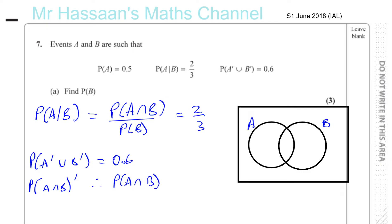Now that's going to help us. Because once we know that P(A∩B) is 0.4 and we know the probability of A is 0.5, then the part of A only — outside of B — must be 0.1.